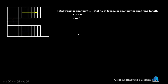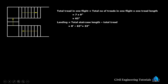Now we will calculate the landing. Landing equals total staircase length minus total tread. Total tread is 63 inch. This is the landing of this side staircase. Landing equals total staircase length 8 feet minus total tread 63 inch. We are getting 33 inch. So landing is 33 inches.